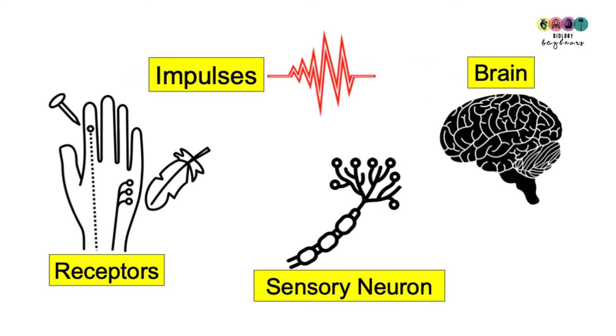So specialised receptors in every case are detecting stimuli. This results in the generation of a nervous impulse which gets carried to the brain by sensory neurons.